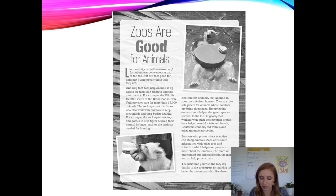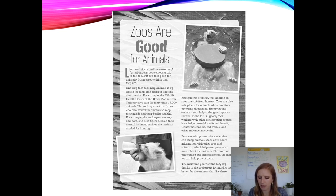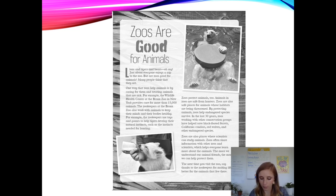In the last 30 years, zoos working with other conservation groups have helped save black-footed ferrets, California condors, red wolves, and other endangered species. Zoos are also places where scientists can study animals. Zoos often share information with other zoos and scientists, which helps everyone learn more about the animals. The more we understand our animal friends, the more we can help protect them. Stop there again — what did you learn? Turn and tell your partner.